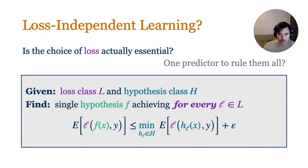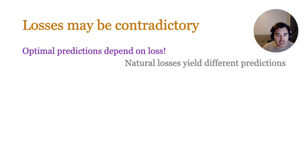Recent work, however, has questioned this wisdom. Is the choice of loss function actually essential? Or is it possible to learn a single predictor that minimizes many losses simultaneously? That is, a single hypothesis F that competes with the best loss-specific hypothesis over many different choices of loss L. Pretty quickly, we can see that this formulation of loss-independent learning doesn't quite make sense though.